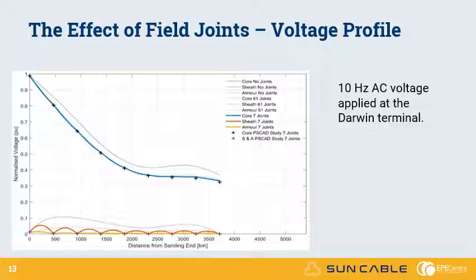The impact of field joints on the voltage profile along the cables is also analysed for a single 10 Hz frequency applied at the Darwin terminal. This is the voltage magnitude. Focusing just on the blue curves, which are for the core conductor, there is a clear impact. And 7 field joints remains a reasonable approximation. Now it's a little hard to see each of the lines. But the light faint blue line is for no field joints. And the dark blue line is for 7 field joints. And there's a small dash dotted line for 61 field joints that just sits below them. And those two match, the 61 and the 7 field joints case. And now also in this plot, we also have two other colours, red and yellow. They represent the sheath and armour.